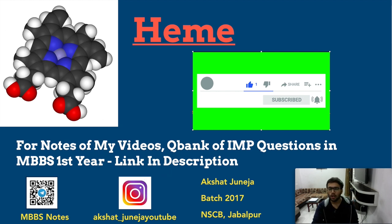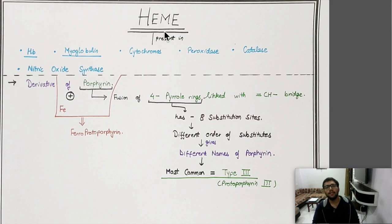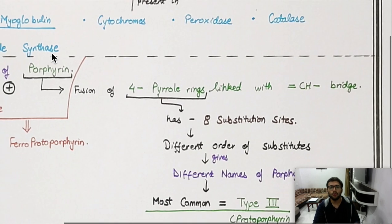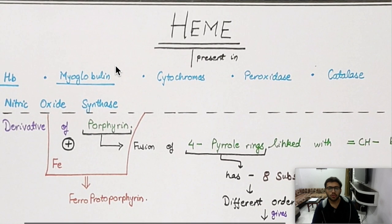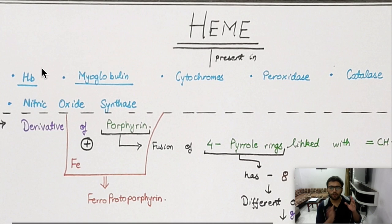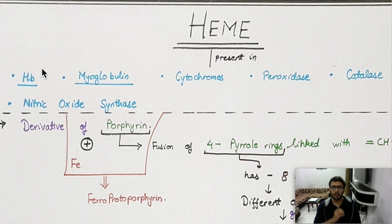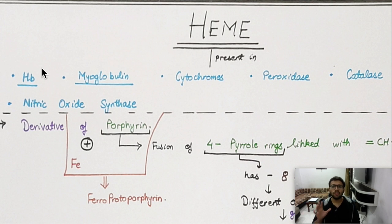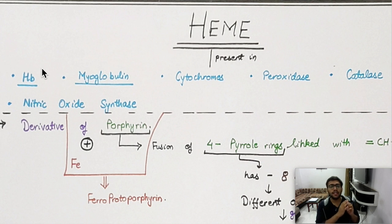So what is heme? Starting with some basic facts: heme is present in hemoglobin, myoglobin, cytochromes, peroxidase, catalase, and nitric oxide synthase — all of these have heme as a structural component. So you already know the importance of heme. Now we have to understand how heme is formed.